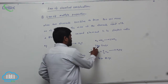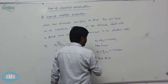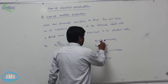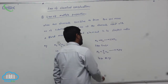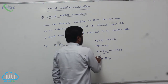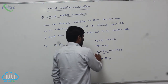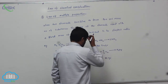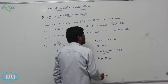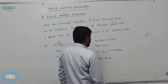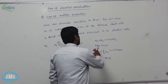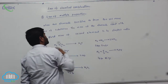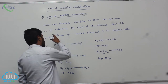When N₂ reacts with 2 moles of oxygen, it converts into nitrogen dioxide (NO₂). And N₂ reacts with 5/2 moles of O₂ to form nitrogen pentoxide (N₂O₅), giving 28 grams of nitrogen and 80 grams of oxygen.